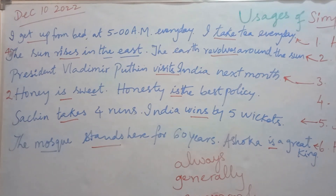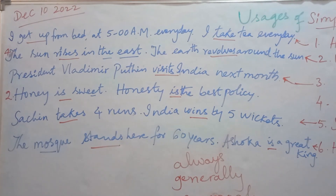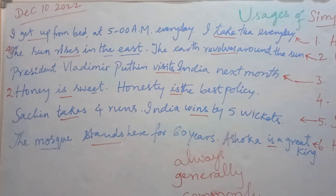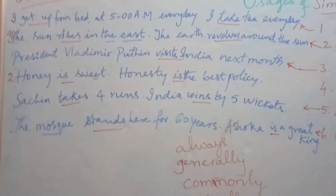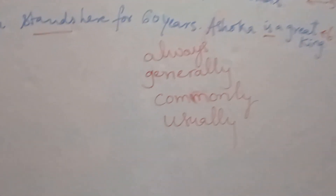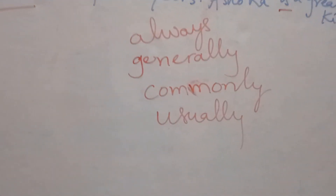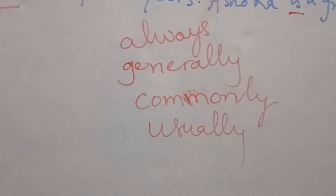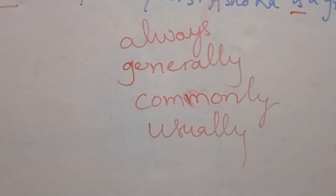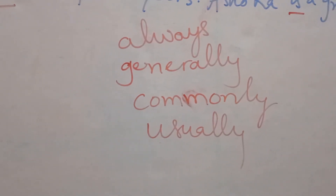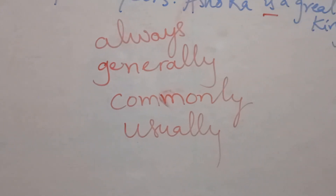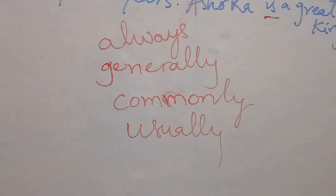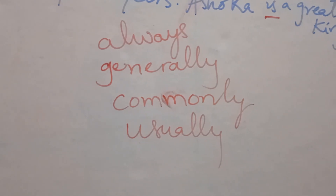So in these sentences, you find the underlined verbs. These are all first form verbs. And in the simple present tense, we find some adverbs. These are called time adverbials. These adverbials are: always, generally, commonly, usually, like this.